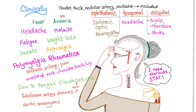Clinically, what are the signs and symptoms? Fever, anemia — which is normocytic normochromic — headache, malaise, fatigue, weight loss, sweats, and arthralgia.